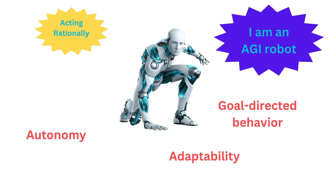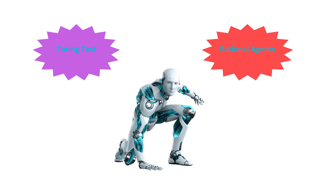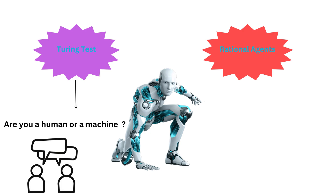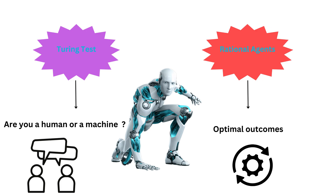Beyond these pillars, the Turing test and the concept of rational agents push AI towards new horizons. The Turing test challenges machines to exhibit indistinguishable behavior from humans, while rational agents focus on achieving optimal outcomes.